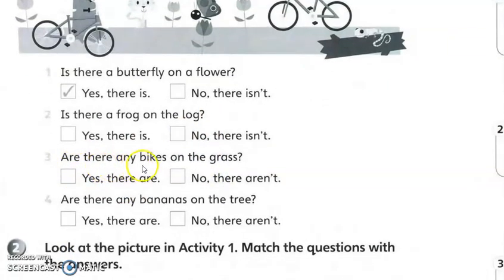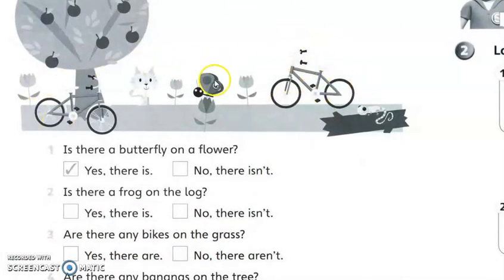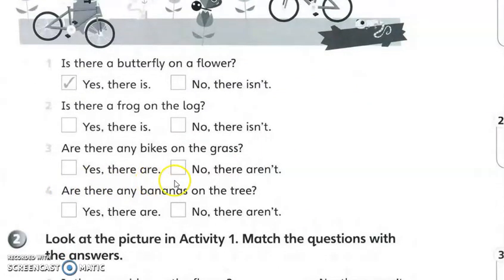Are there any bikes on the grass? Bikes ni apa? Basikal. On the grass, di atas rumput. Ada tak basikal di atas rumput? Yeah, okay, tengok. Ada tak basikal? Okay, kalau ada, yes they are. Kalau tak ada, no they aren't. Okay, soalan nombor 4.